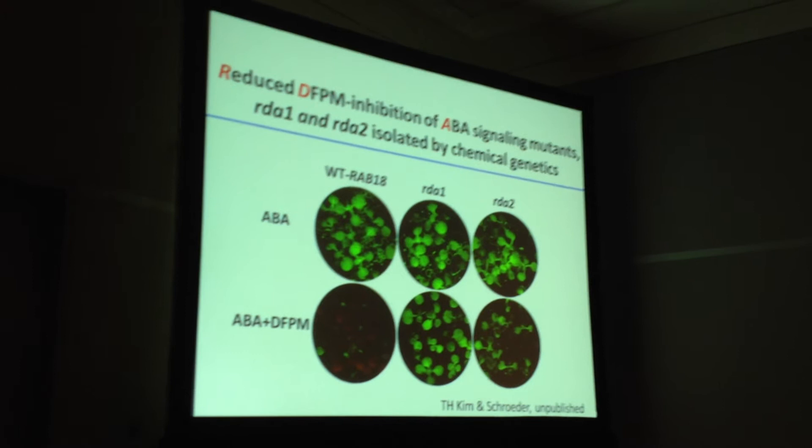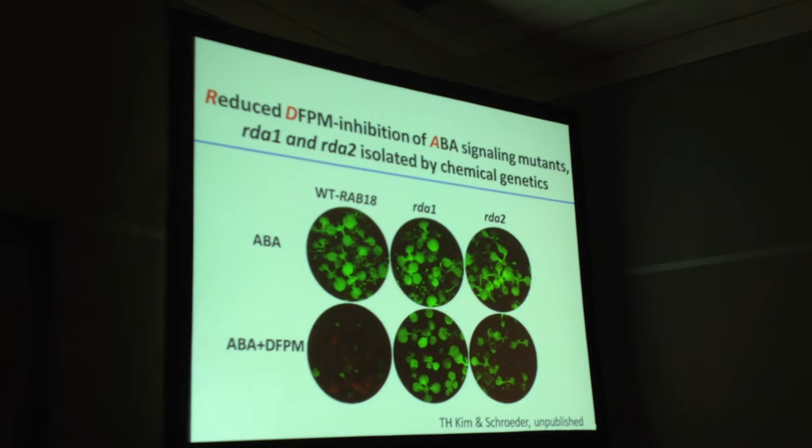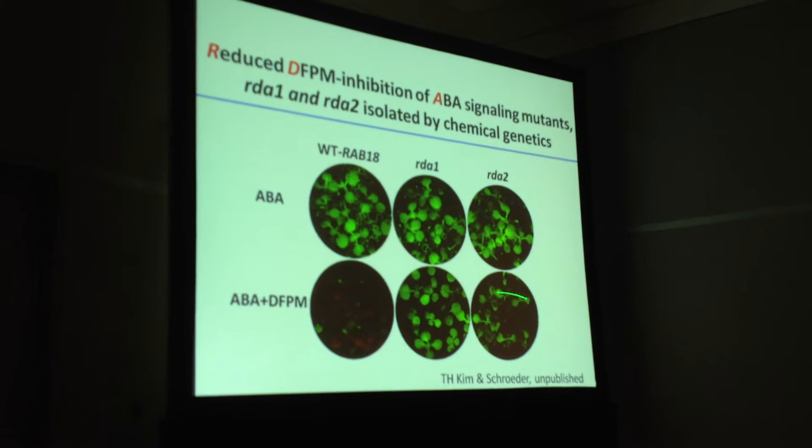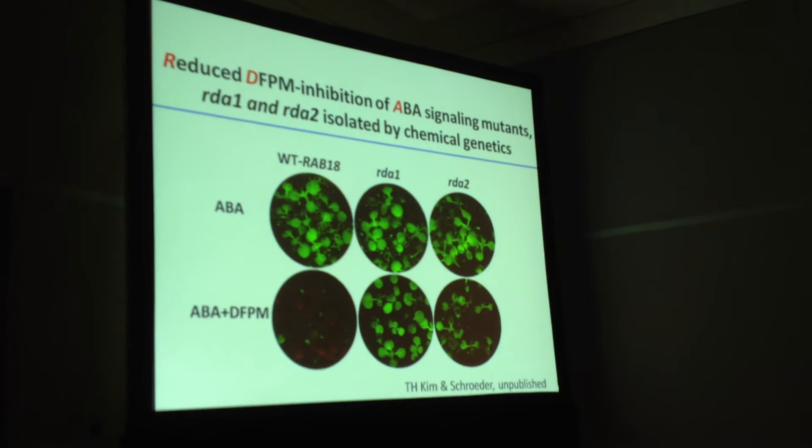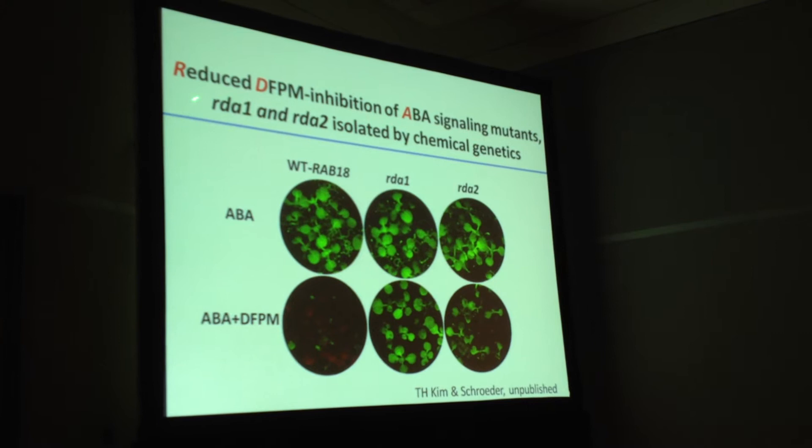Such a screen finds new alleles in PAD4, EDS1, SGT1B, RAR1, and Victor. But here we have two mutants that, based on rough mapping, do not correspond to known ABA or known ETI signaling genes. We call these RDA — for reduced DFPM inhibition of ABA signaling — and we believe these are quite interesting.